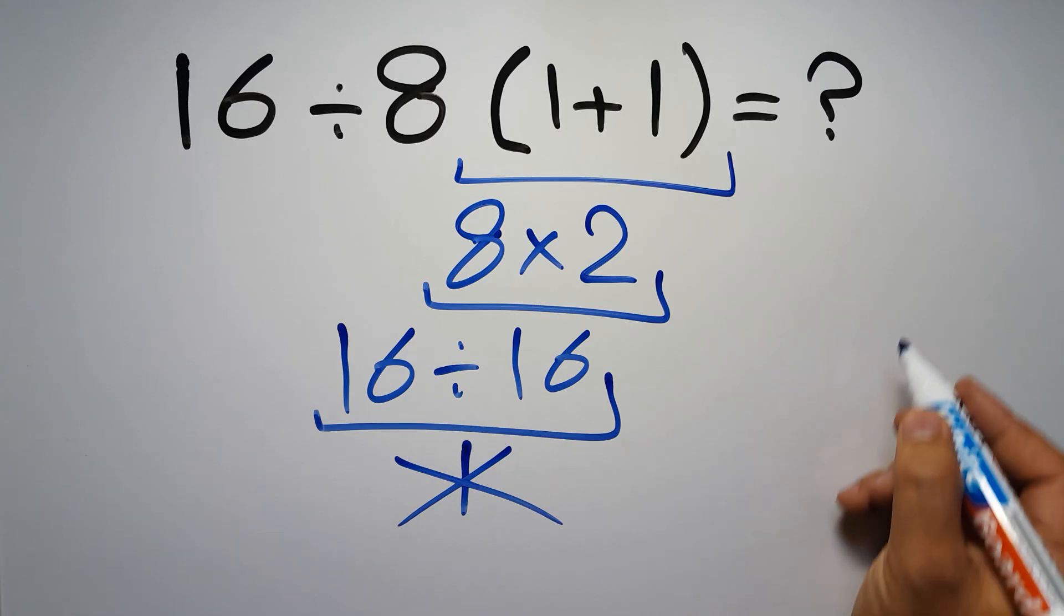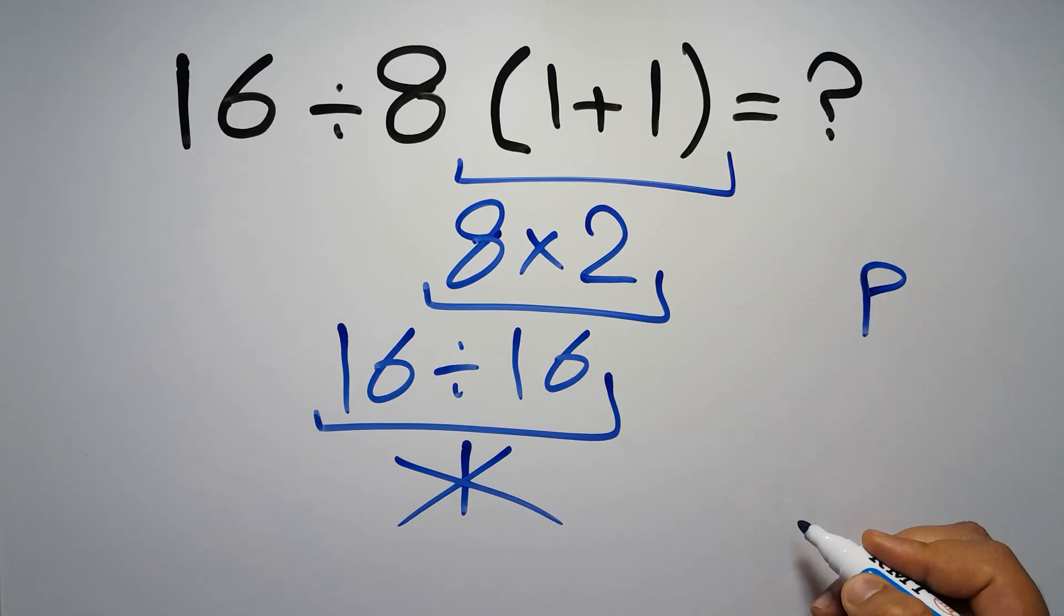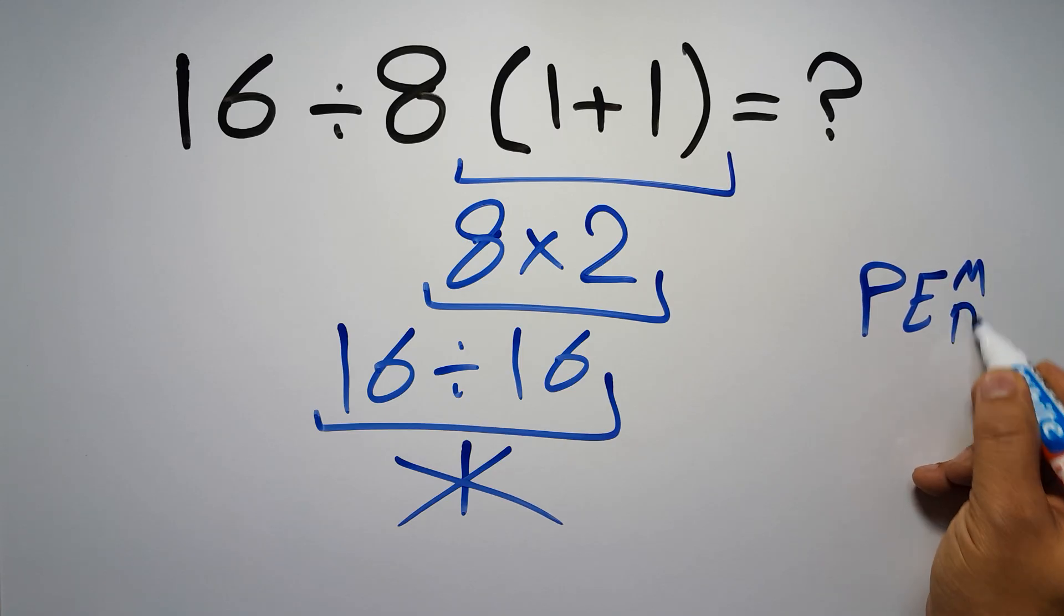because according to the order of operations, first we have to do parentheses, then exponents, then multiplication or division, and finally addition or subtraction.